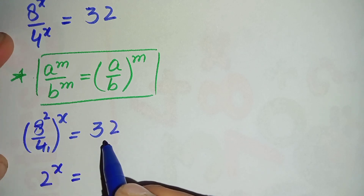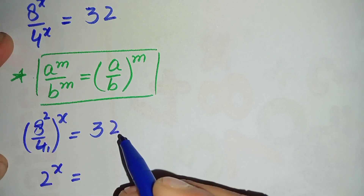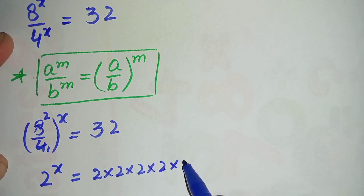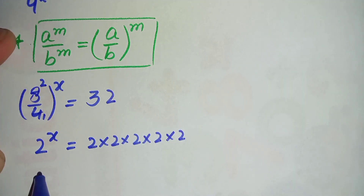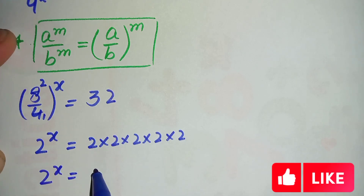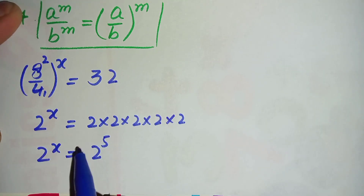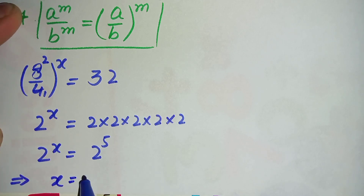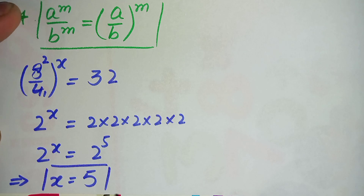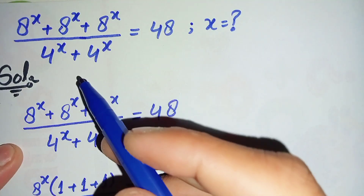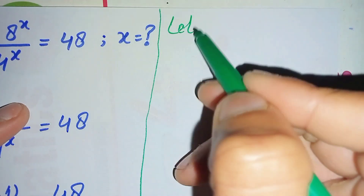So 2 raised to power x is equal to 32. We convert 32 to exponential form: 2×2=4, 4×2=8, 8×2=16, 16×2=32, so 32 equals 2 raised to power 5. Therefore 2^x = 2^5. Since the bases are the same on both sides, we compare powers: x equals 5 is our answer and root of the above math problem.